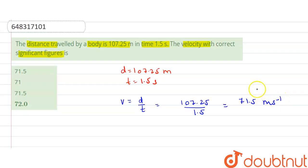But we are asked to find out the velocity with correct significant figures. When we perform multiplication or division, then the final answer should have the same number of significant figures as the quantity which has the least significant figures.